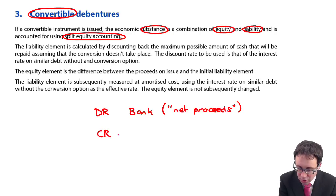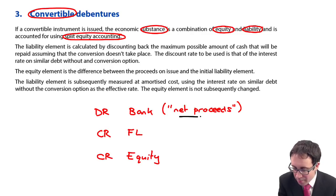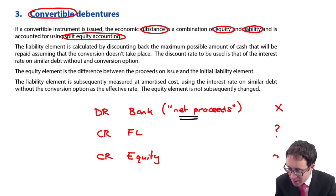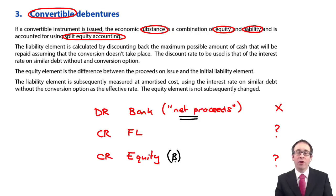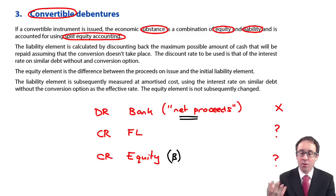With split equity accounting we credit a financial liability and also credit the equity. The issue is: at what amount do we credit each? We credit the financial liability at its calculated value, then treat it at amortised cost, and the credit to equity is just the balancing figure — the difference between the proceeds received and the financial liability recognised. The key issue is calculating the value of this financial liability.